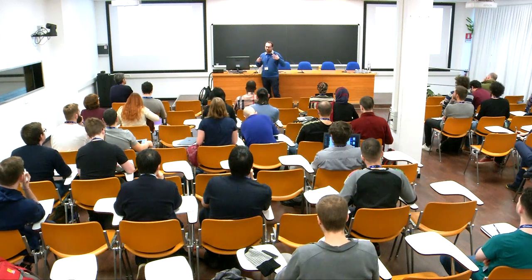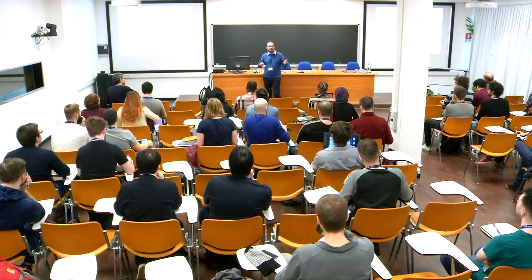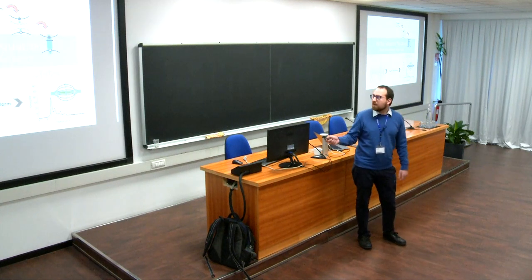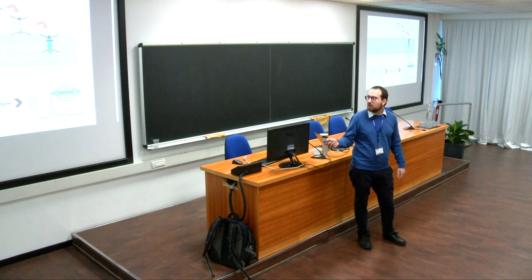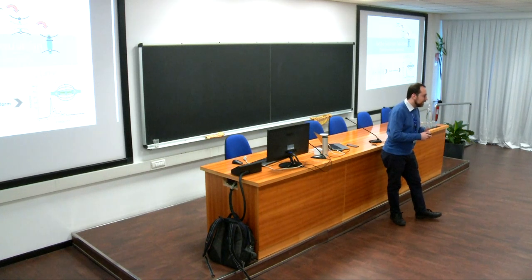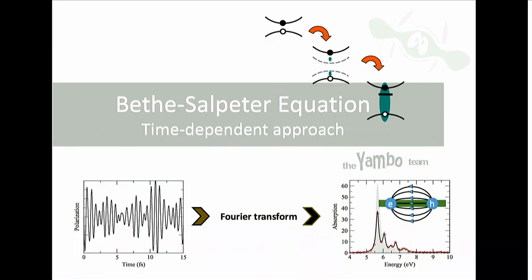Today we start talking about the spectroscopy of neutral excitations — that is, when you don't add or remove a particle to the system, but want to measure the probability of exciting an electron from the valence band to the conduction band. One can do a DFT calculation and get a band gap, corrected for example with the GW method, but this does not mean that in an optical absorption experiment you will see that quasi-particle band gap. In general you will see the optical gap, which in a semiconductor can be at a lower energy than the quasi-particle band gap, because the excited electron-hole pair — the hole and the electron — interact with each other via the Coulomb interaction, and this lowers the energy of the electron-hole bound pair with respect to the independent particle result.